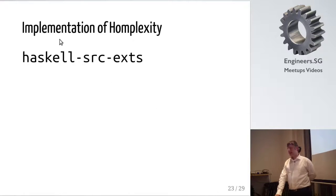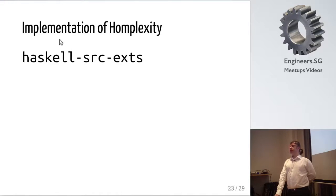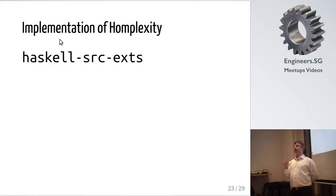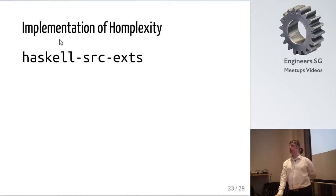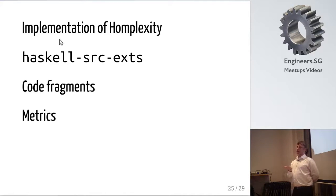I was actually surprised how easy it is to implement this. I basically took Haskell-src-exts, which is a full-fledged parser for the Haskell language. Then I used UniPlate to go into depth of each expression or fragment of code, and limited myself to only checking certain types of fragments and made functions on them. The code is very short and concise. The code fragments I handle are basically types, functions, global functions, and modules for now.